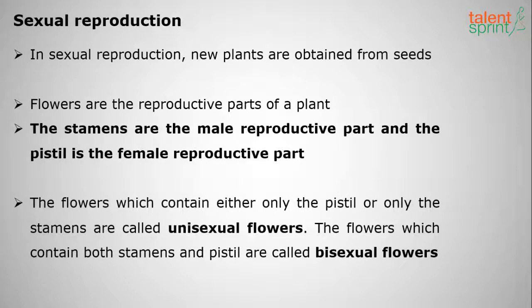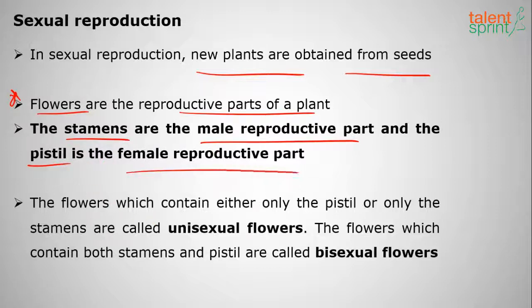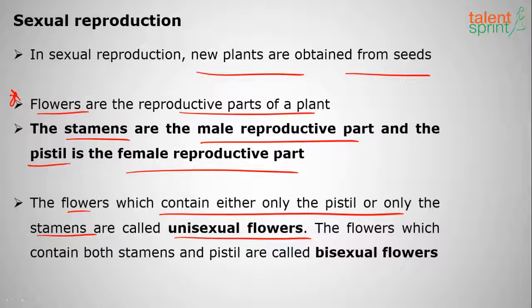In asexual reproduction, vegetative parts are involved. In sexual reproduction, the reproductive parts of a plant are involved. New plants are obtained from seeds. The flower is the reproductive part of a plant — a very important question. Stamens are the male reproductive part, and the pistil is the female reproductive part. Flowers containing either only the pistil or only the stamens are called unisexual flowers, while flowers containing both stamens and pistil are called bisexual flowers.